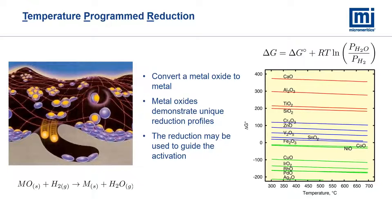A cold trap or sorption trap is used to remove the moisture before it reaches the highly sensitive thermal conductivity sensor. The reduction fingerprint at individual peak temperatures depends on many factors including the metal oxide, particle sizes, interactions with supporting material, oxidation states, and analysis conditions. Not all metal oxides are easily reducible. Metal oxides with high Gibbs free energy are more difficult, while blue and green metal oxides may be able to reduce. The furnace on the AutoChem 3 is able to ramp to 1200 degrees Celsius in these more difficult cases.